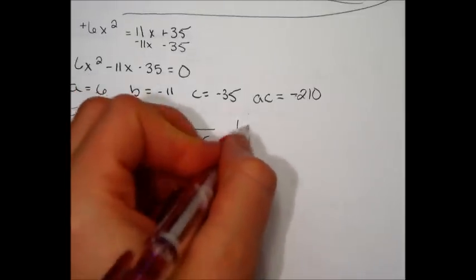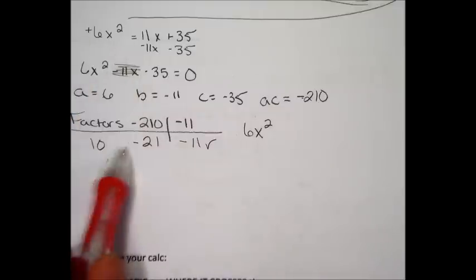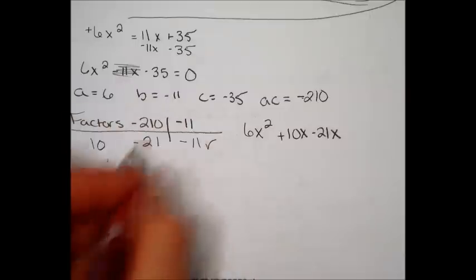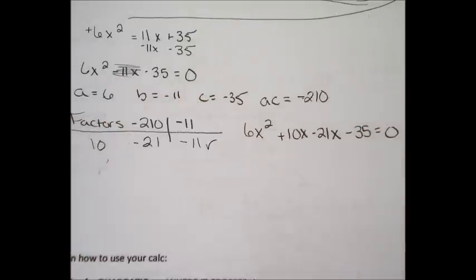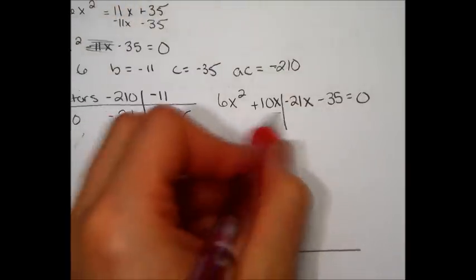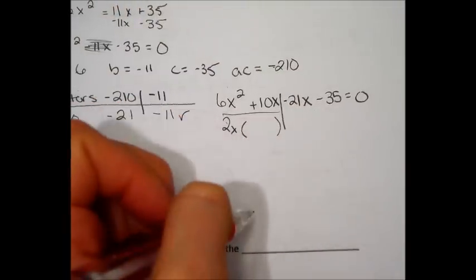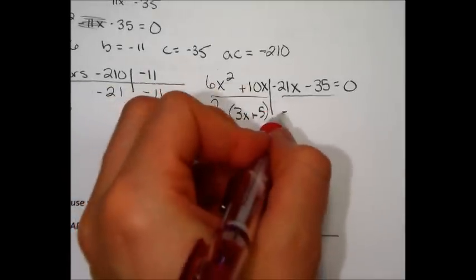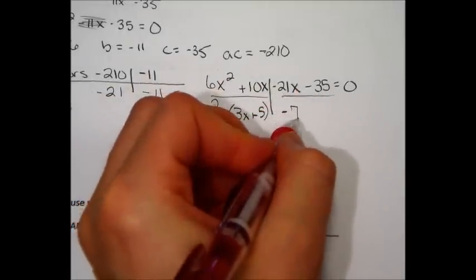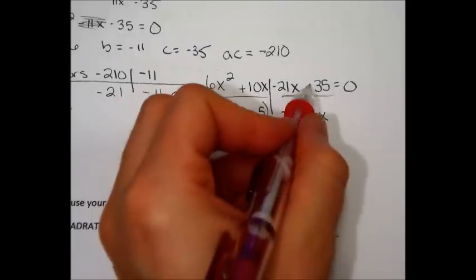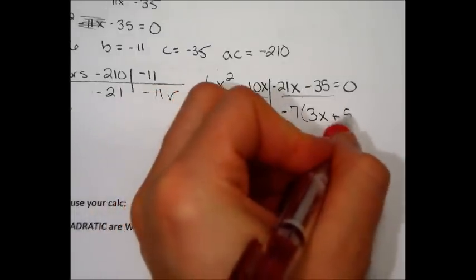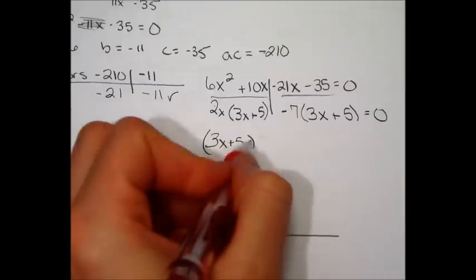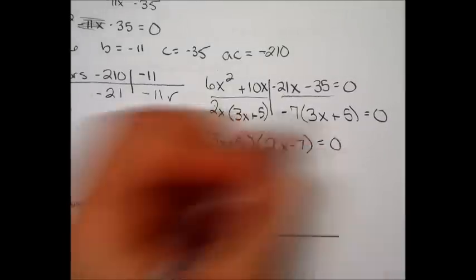Keep the 6x squared. No longer do you keep the 11x. You're going to change it to plus 10x and minus 21x. And then keep the minus 35 equals 0. The first two have a 2 and an x you can pull out. You'll be left with 3x plus 5. The second two, you need to pull out a negative. And what goes into both those numbers? 7. That will give you a 3x, and because you have a negative, take out a negative, plus 5. So we're going to rewrite our 3x plus 5 because it matches. We're going to rewrite our 2x minus 7.